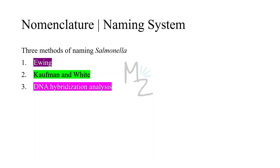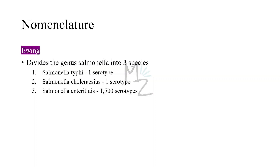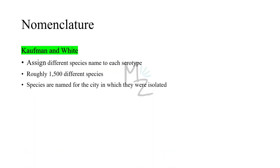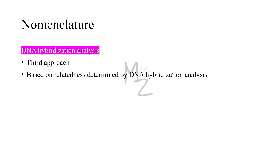Nomenclature — the naming system of Salmonella. There are three methods: Ewing; Kaufmann and White; and DNA hybridization analysis. Ewing divides the genus Salmonella into three species: Salmonella typhi, Salmonella choleraesuis, and Salmonella enteritidis. In this scheme, there is only one serotype in each of the first two species and 1,500 serotypes in the third. Kaufmann and White assign different species names to each serotype — there are roughly 1,500 different species, usually named for the city in which they were isolated. The third approach is based on relatedness determined by DNA hybridization analysis.